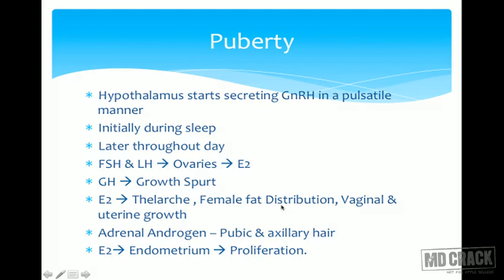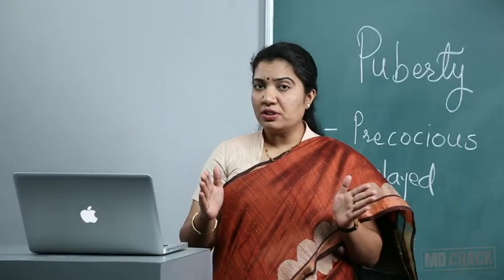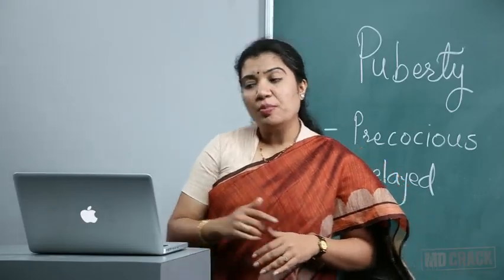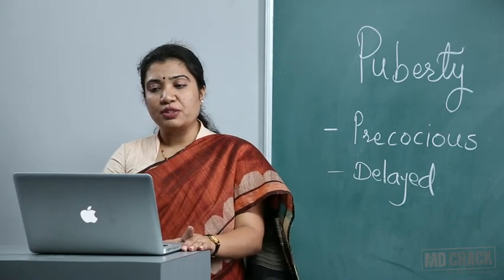Estrogen acts on breast tissue causing thelarche, female fat distribution, and vaginal and uterine growth. Adrenal androgens are formed, leading to pubic and axillary hair development. Estrogen causes proliferation of the endometrium, and upon hormone withdrawal there is menstrual bleeding — the first menses — leading to menarche.